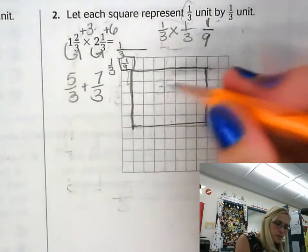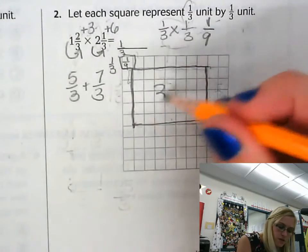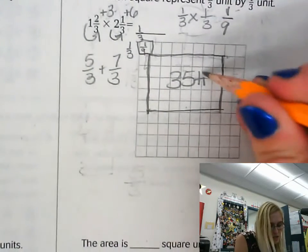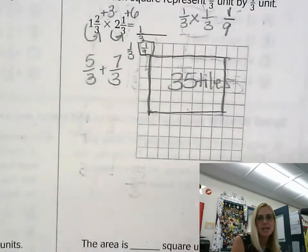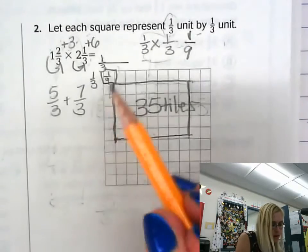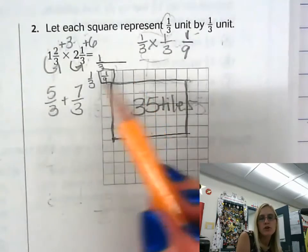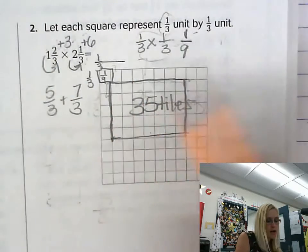So now what we do is we realize that I have 35 tiles in there. Now it's not 35 units, it's 35 tiles. And each unit we measured up here, each unit is one third by one third. So each unit is actually one ninth.